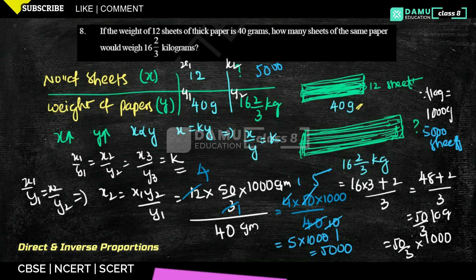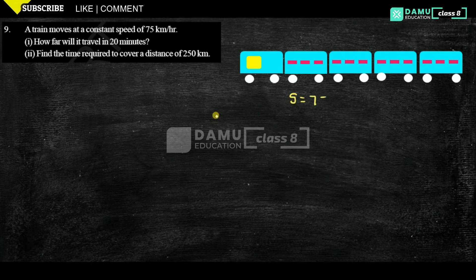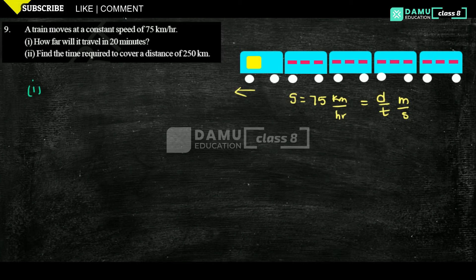In this module we are going to discuss: a train moves at a constant speed of 75 km per hour. The speed formula is distance divided by time. The first question is: how far will it travel in 20 minutes? Time t equals 20 minutes and speed equals 75 km per hour.